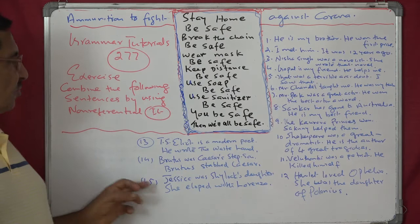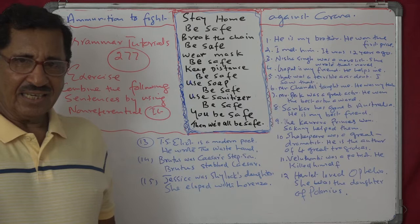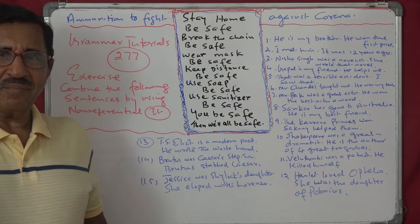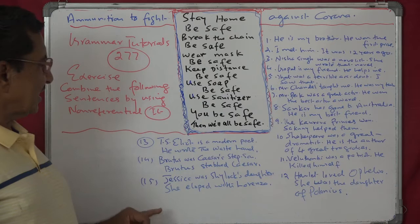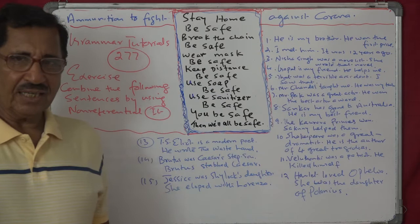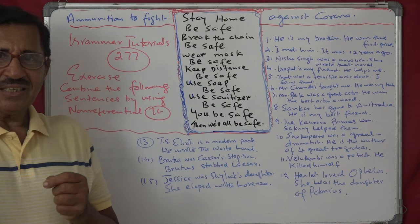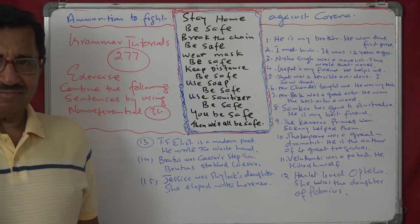'Brutus was Caesar's stepson. Brutus stabbed Caesar.' Combined: 'It was Brutus, the stepson of Caesar, who stabbed him.' Then — 'Jessica was a child. She eloped with Lorenzo.' Combined: 'It was Jessica, Shylock's daughter, who eloped with Lorenzo.' Understand?